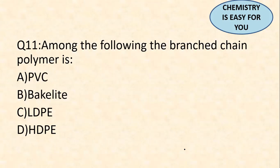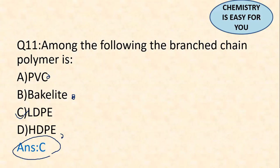Question 11: which among the following is a branch chain polymer? Bakelite is not a branch chain — it is a cross-linked polymer. The others are straight chain polymers. The branch chain polymer is option C — LDPE. LDPE is the branch chain polymer; bakelite is cross-linked, and HDP and PVC are straight chain polymers.